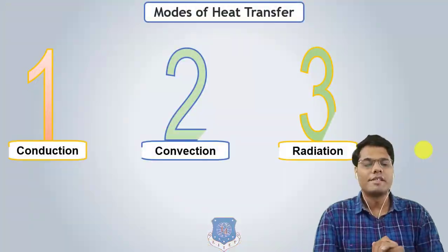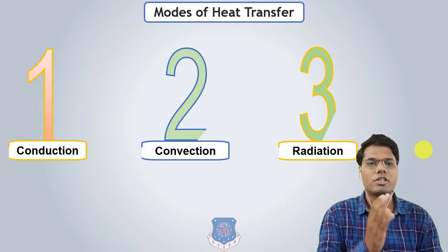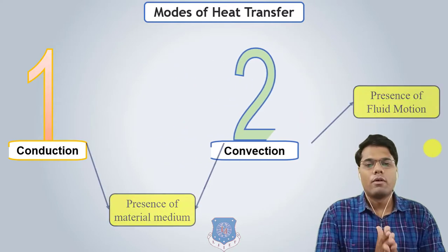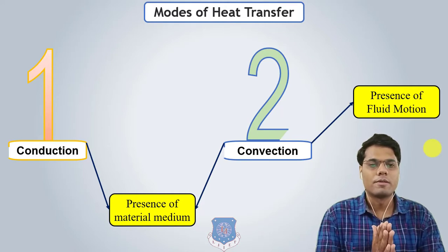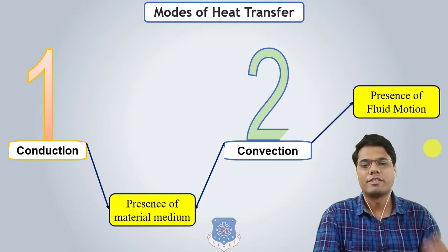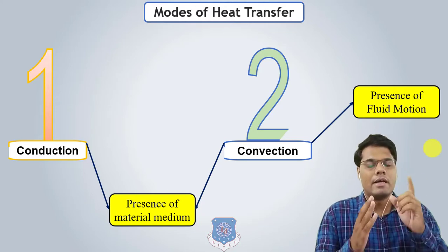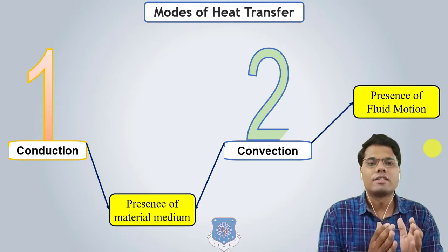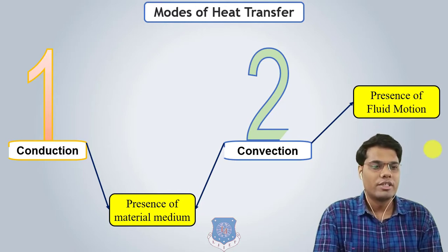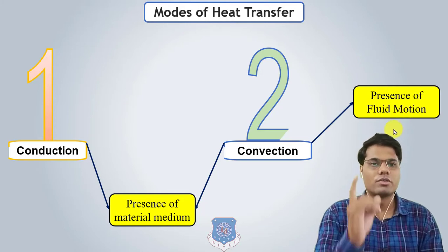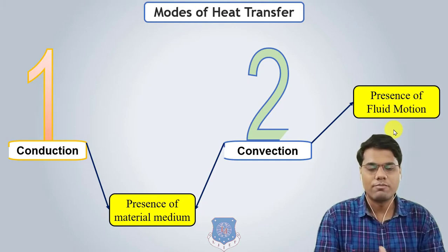As we have already studied, in heat transfer there are three modes: conduction, convection, and radiation. Conduction and convection are similar because in both, the presence of a material or medium is necessary. Convection is essentially conduction with a fluid in motion — it requires one solid boundary with a fluid in motion for heat transfer to occur by the convection mode.